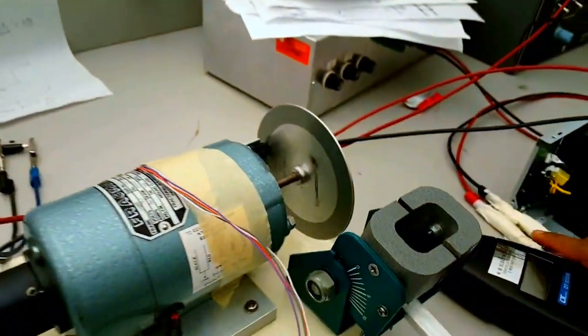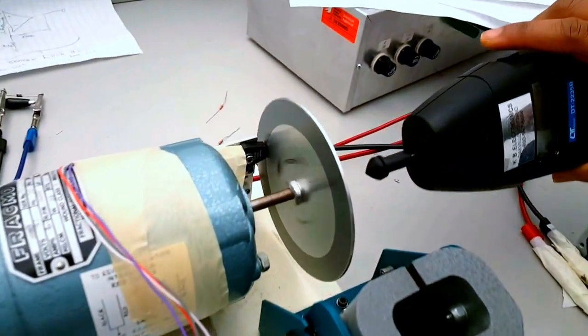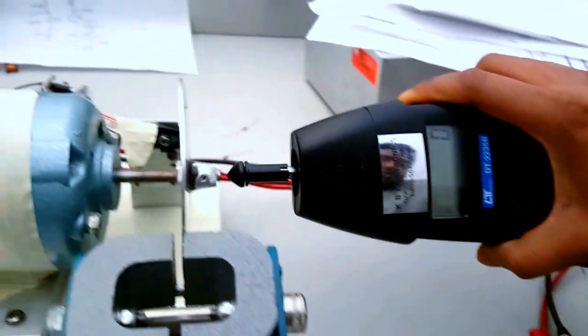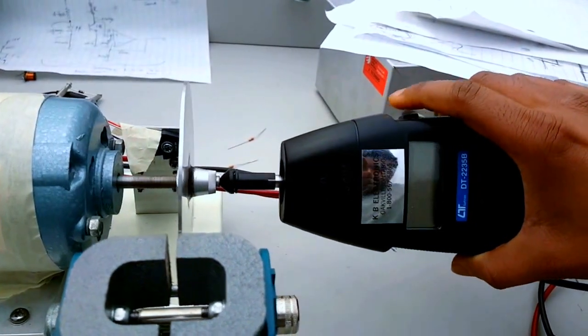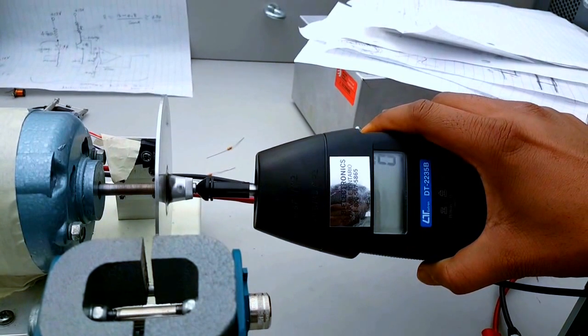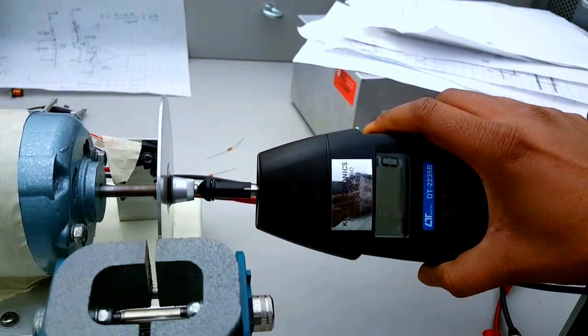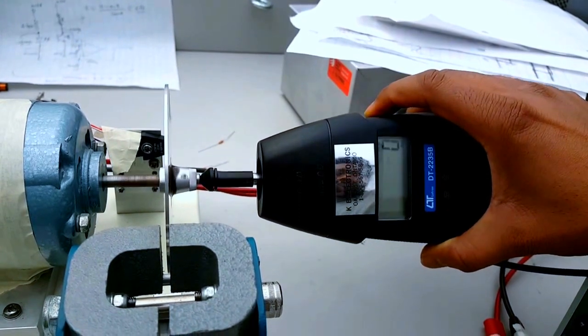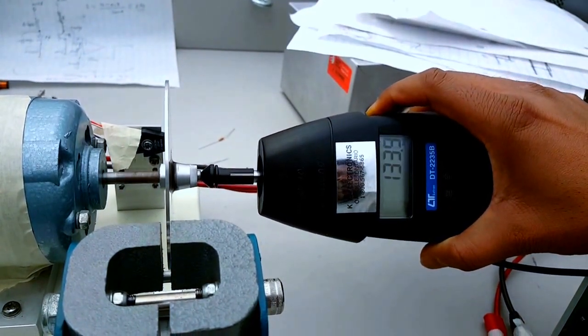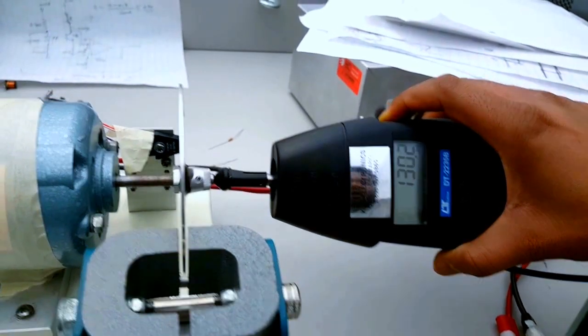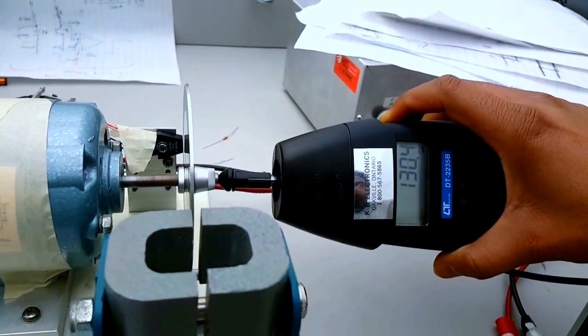If you come back here to the motor, I'm going to measure the speed again. This is probably going to be a different speed. This is unloaded. There you go, it's 130 rpm.